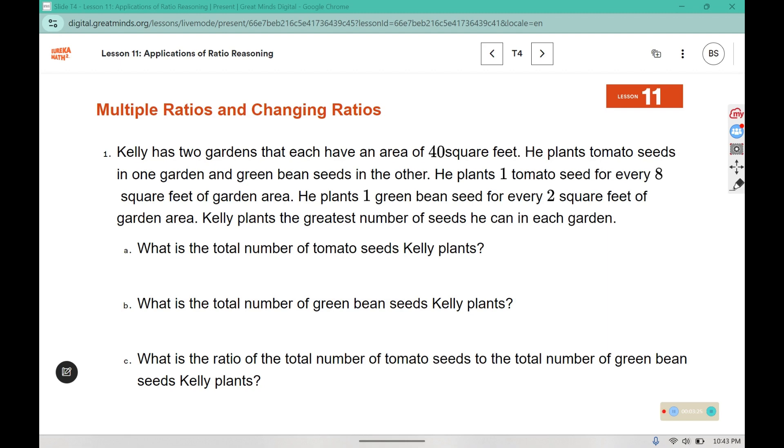This is in your book. Kelly has two gardens that each have an area of 40 square feet. He plants tomato seeds in one garden and green bean seeds in the other. He plants one tomato seed for every eight square feet of garden area and he plants one green bean seed for every two square feet of garden area. Kelly plants the greatest number of seeds he can in each garden. What is the total number of tomato seeds Kelly plants? So we have one for every eight square feet. If I were to draw eight boxes, and we know that the square feet is 40 in each garden, 40 split into eight parts would be five. And we know that he planted one tomato seed for every eight square feet, so five goes in each box. The total number of tomato seeds he plants: five tomato seeds.